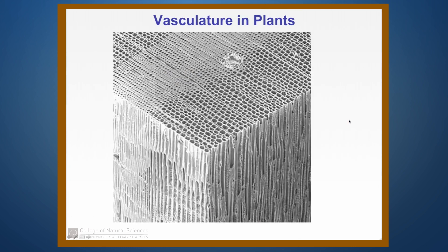Here is a nice electron micrograph of a cut through a bunch of xylem. You can see that some of the xylem vessels are bigger and other xylem vessels are smaller. This is what produces tree rings. In the springtime, trees generally produce much larger xylem vessels because water availability is greater. Then as summer proceeds and water availability drops off, they start to produce these smaller vessels.